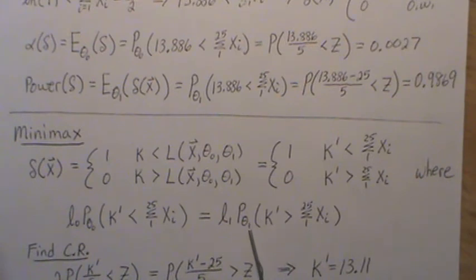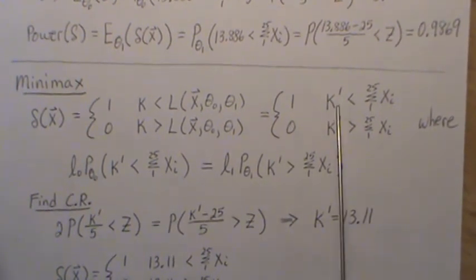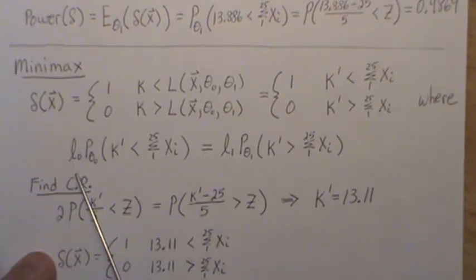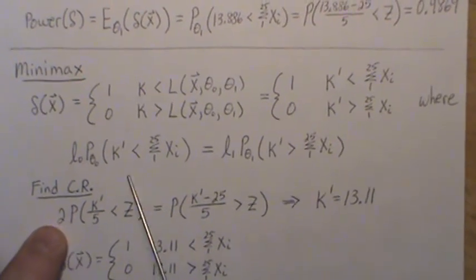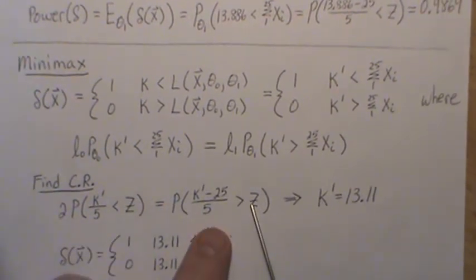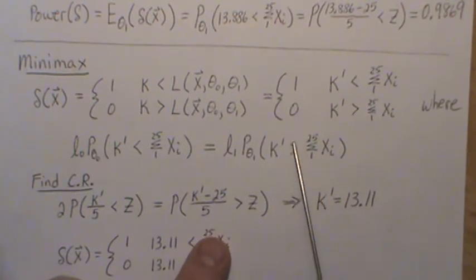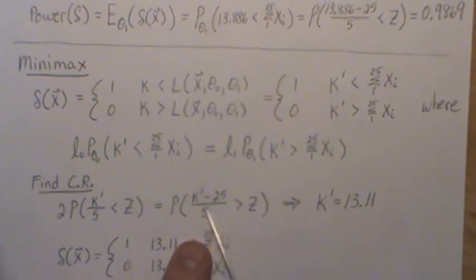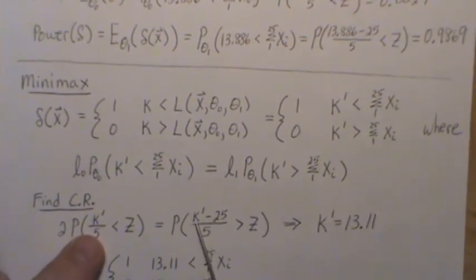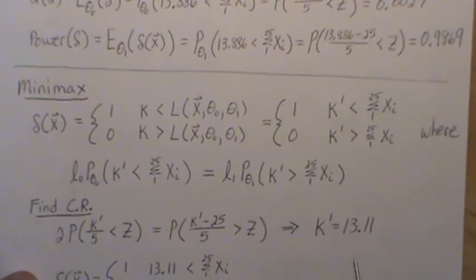Let's find the critical region by solving for k-prime. Dividing L1 to the other side — that's 5 over 2.5 equals 2. The probability expression, after subtracting the mean and dividing by the standard deviation, becomes a standard normal z. The left side involves the probability of being less than k-prime minus 25 over the standard deviation. It's a trial-and-error approach; I used the uniroot function in R to set the two sides equal, and it returned k-prime equal to 13.11.